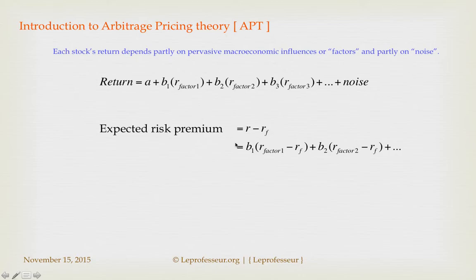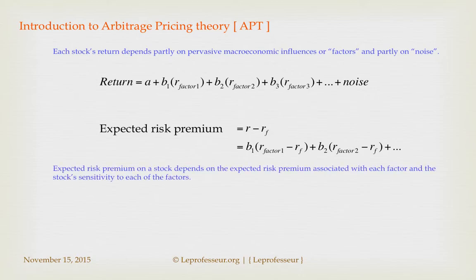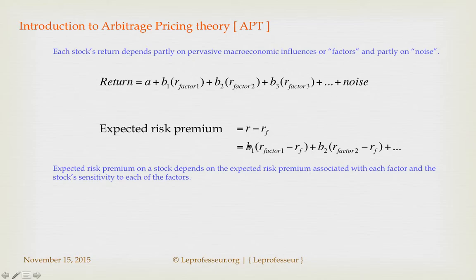The expected risk premium for the stock — remember we said r minus rf, the return on the stock minus the risk-free rate — is our risk premium. In APT, the risk premium depends on the expected risk premium associated with each factor and the sensitivity of the stock to that factor, called b1, which is very similar to beta in CAPM. If your sensitivity to a particular factor is zero, you get the risk premium you would get by investing in T-bills at the risk-free rate.